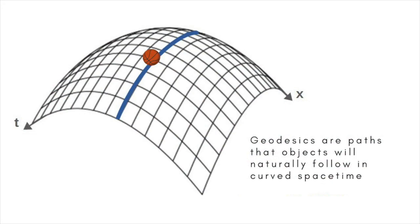In many ways general relativity turns our everyday notion of gravity on its head. Throw a ball straight up in the air, and a graph of its height versus time, seen through Newton's eyes, traces out a parabola. Einstein, however, recognises that a massive body — in this case the Earth — curves the coordinate system itself. Rather than following a curved path in a flat coordinate system, the ball actually follows a minimum-distance path, or geodesic, in a curved coordinate system, returning to the thrower's hand at a later time because the geodesic leads it there.